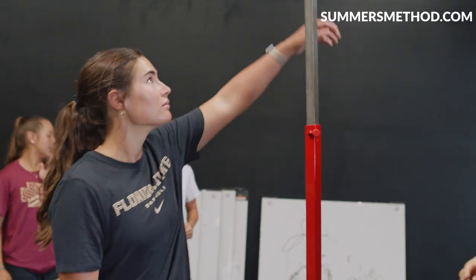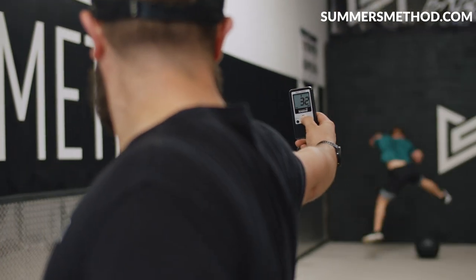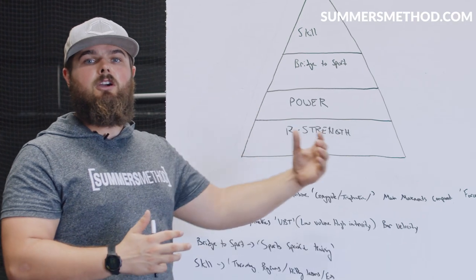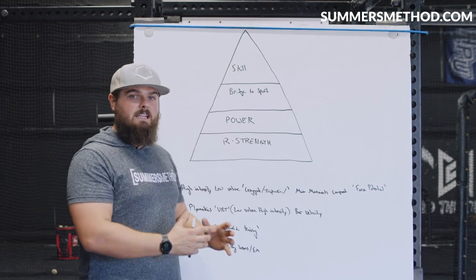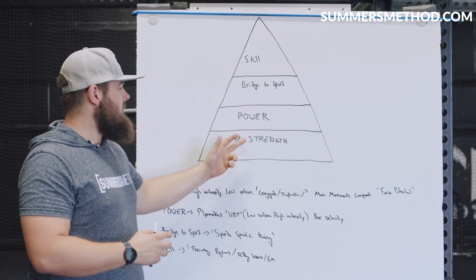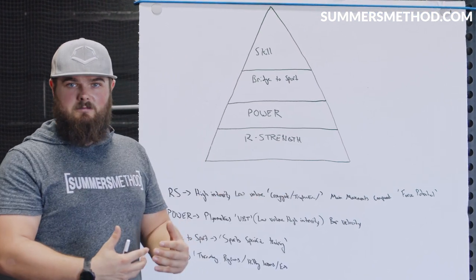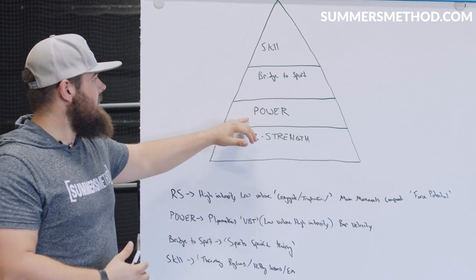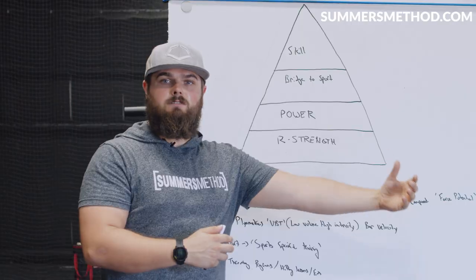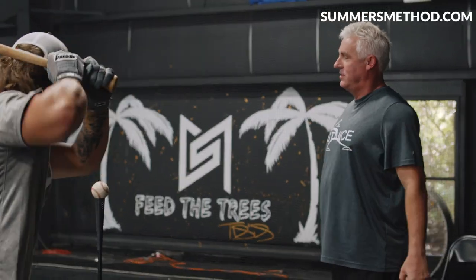So with that being said, every time we get a new athlete and we're trying to build up his explosive power, build up his throwing velocity, exit velo, build speed, this is the pyramid that we go off of. So we assess them in each individual category of this pyramid. As you see, the base is our relative strength, then we'll go up to power, then we'll go to bridge to sport, so getting what we do in the weight room to transfer over to the baseball or softball field, and then we move on to our skill work. Those are our throwing lessons, our hitting lessons, et cetera.